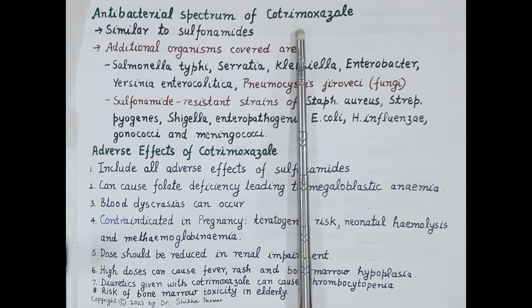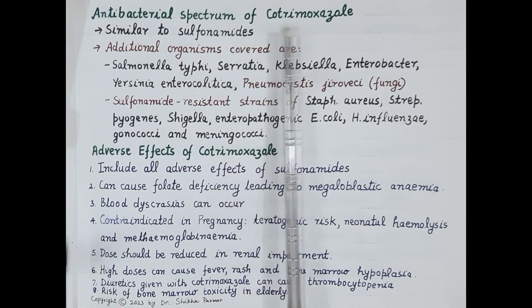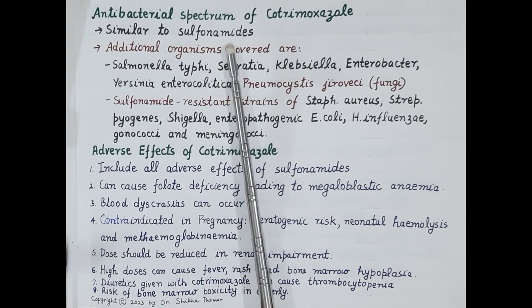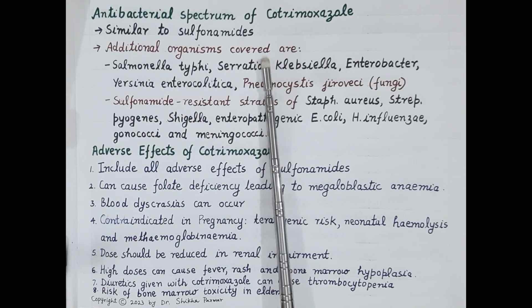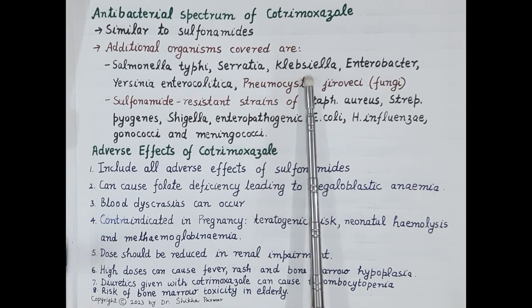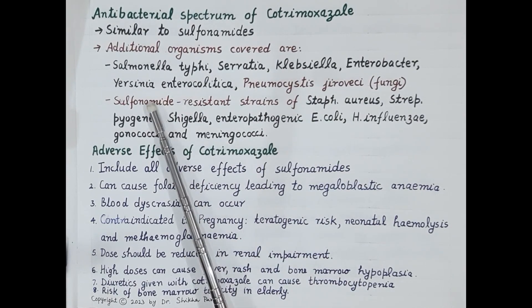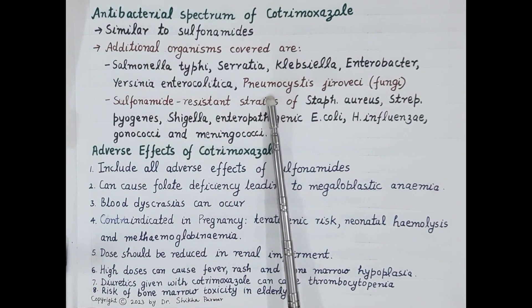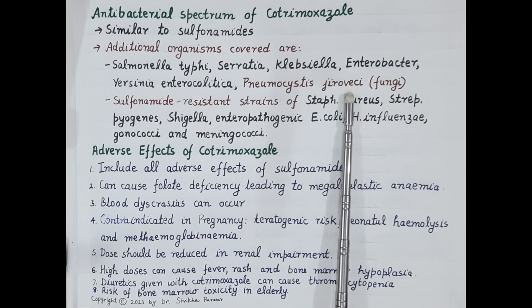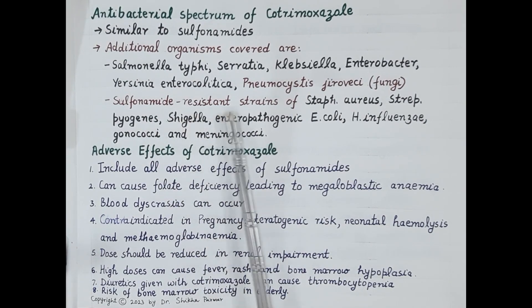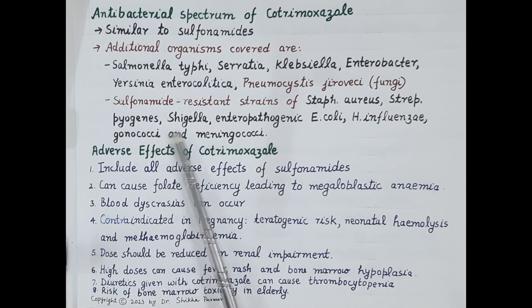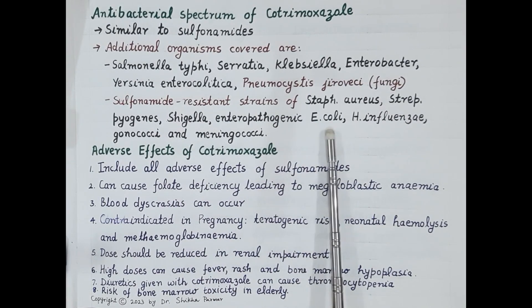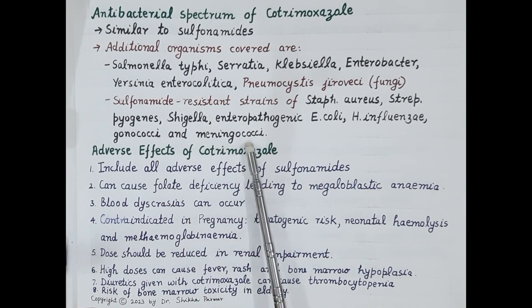Cotrimoxazole is bactericidal, and its antibacterial spectrum is similar to that of sulfonamides but covers a broader range of bacteria. The additional organisms covered by cotrimoxazole include Salmonella typhi, Serratia, Klebsiella, Enterobacter, Yersinia enterocolitica, and the fungus Pneumocystis jirovecii. Cotrimoxazole is also effective against sulfonamide-resistant strains of Staphylococcus aureus, Streptococcus pyogenes, Shigella, enteropathogenic E. coli, Haemophilus influenzae, Gonococci, and Meningococci.